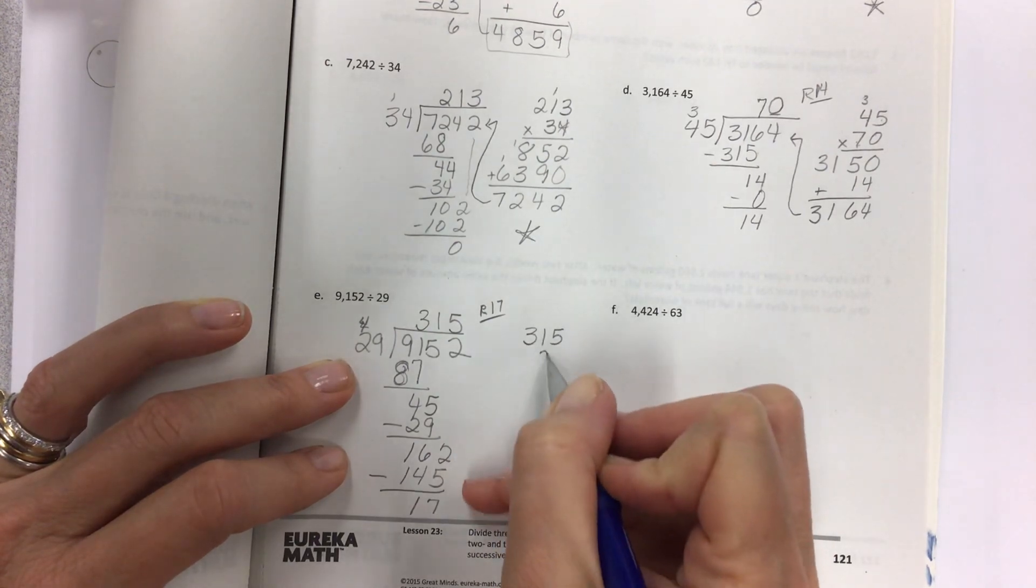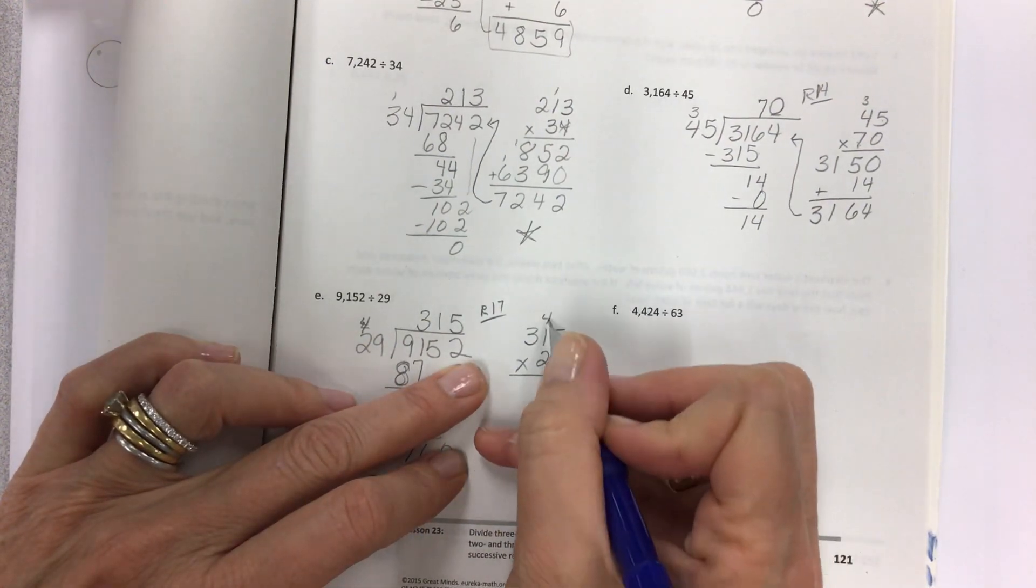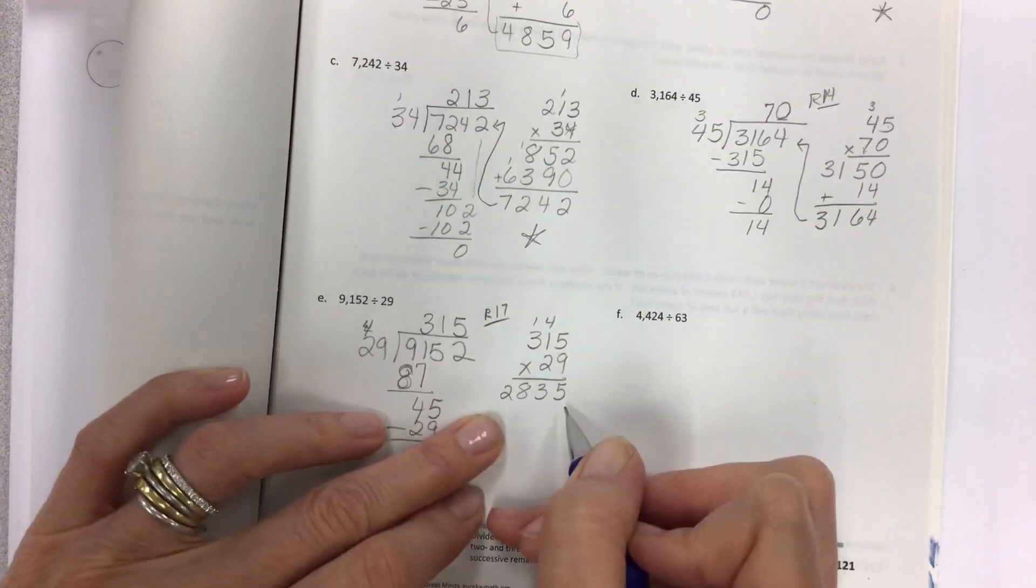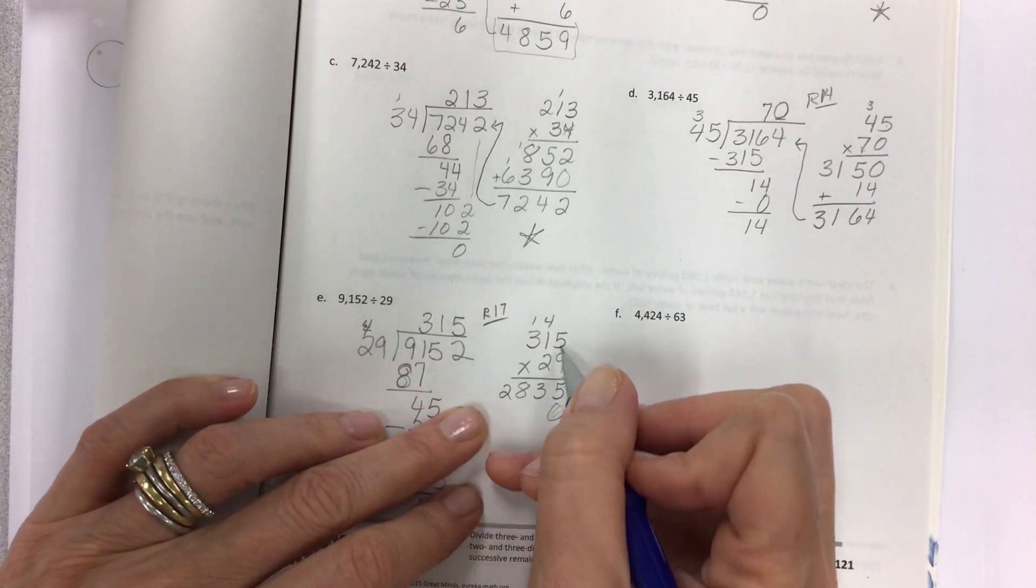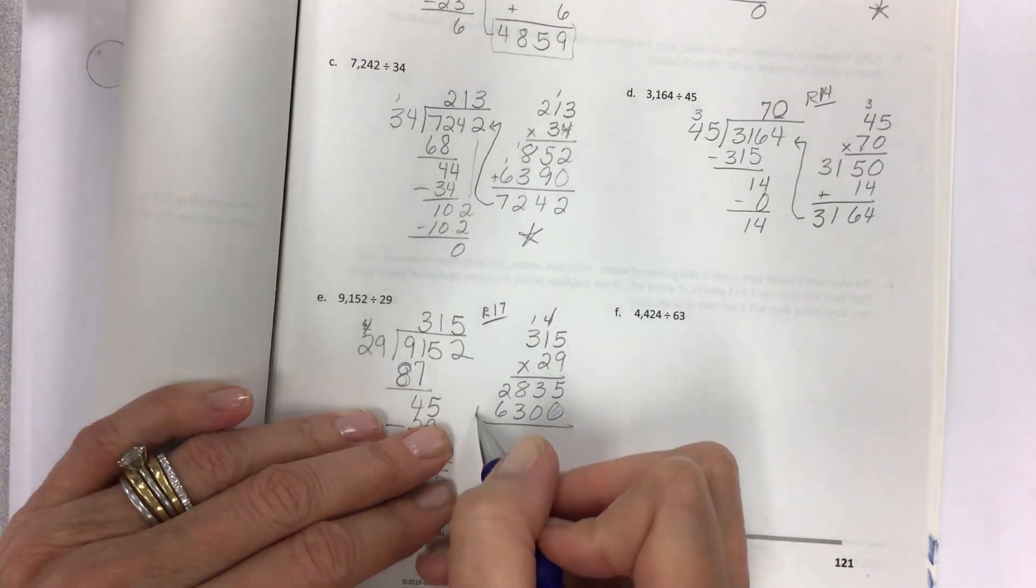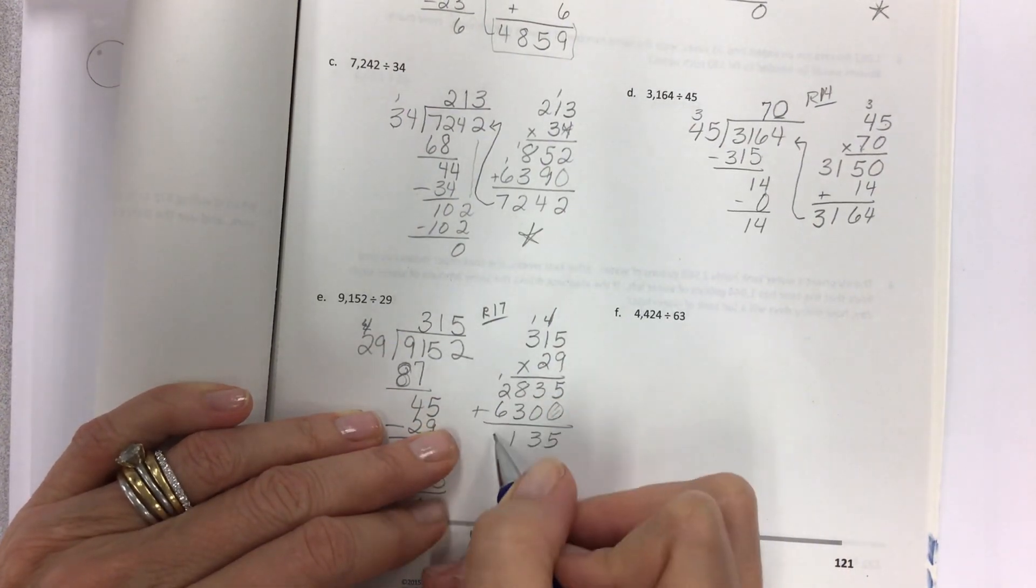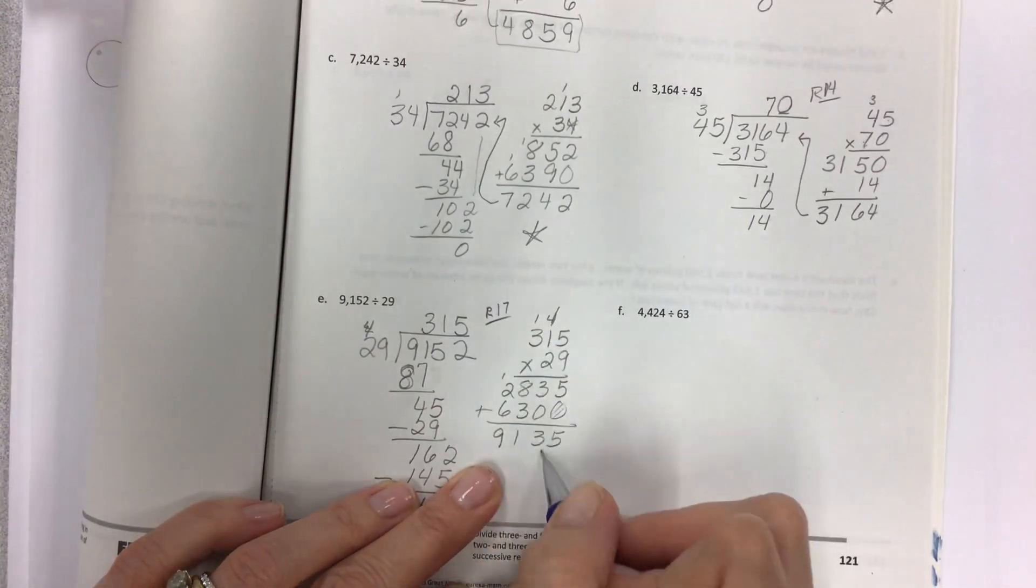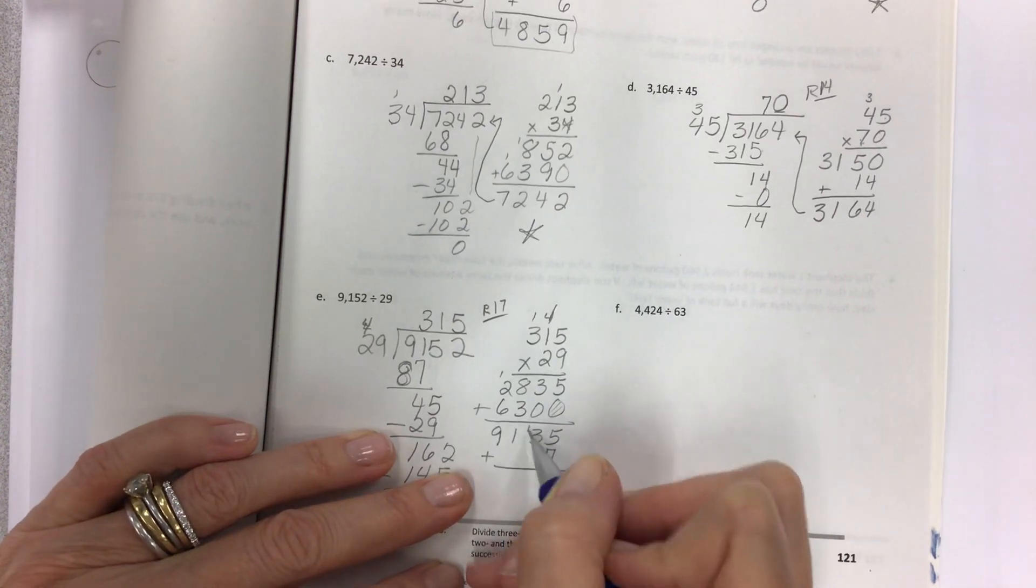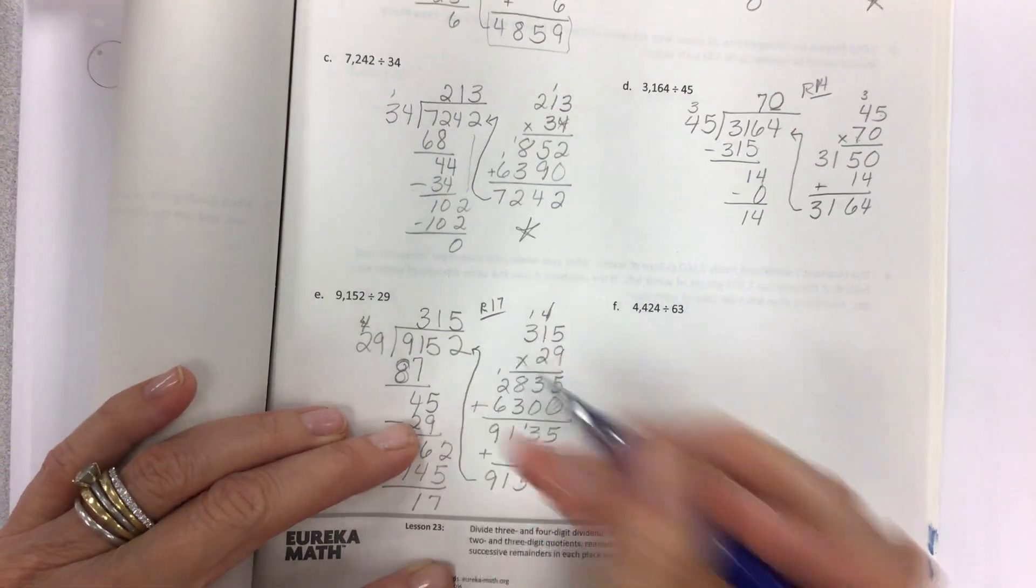Multiply to check. 9 times 5 is 45. 9 times 1 is 9. Plus 4 is 13. Hold this ghost 0. 5 times 2 is 10. 2 times 1 is 2. Plus 1 is 3. 3 times 2 is 6. 9,135. But we need to add our remainder. Don't panic. 7 plus 5 is 12, 9,152. And there you are again.